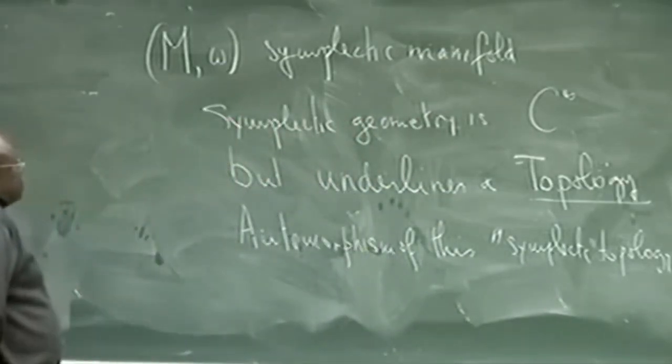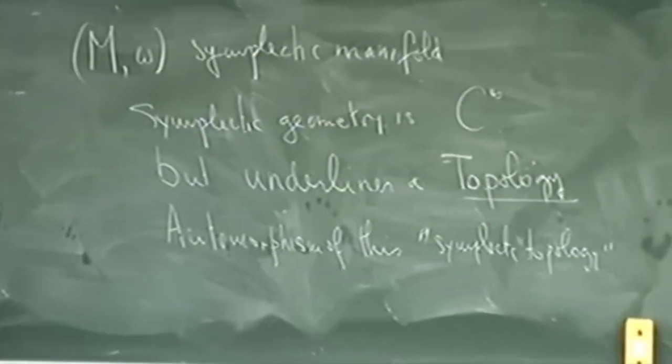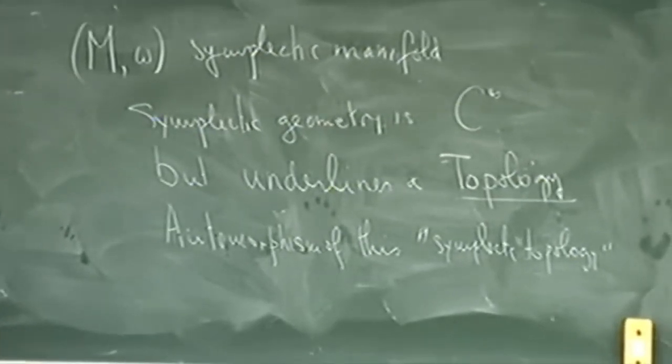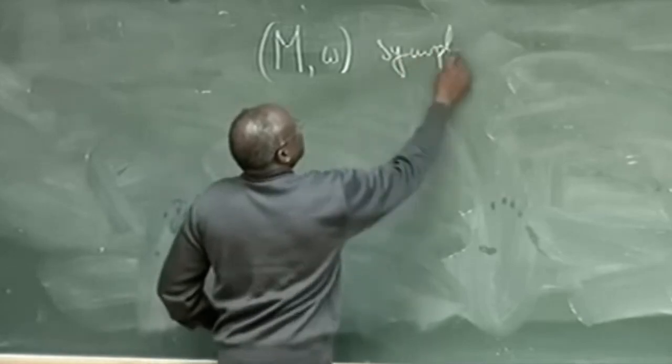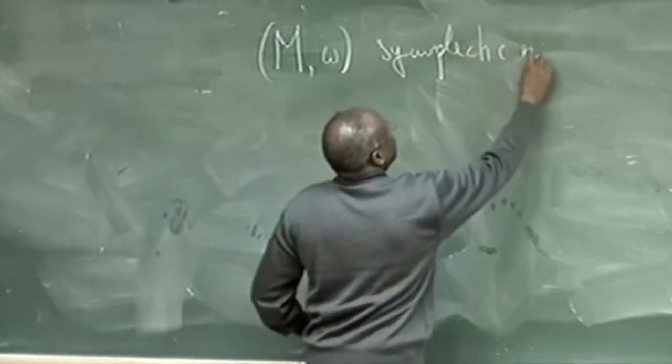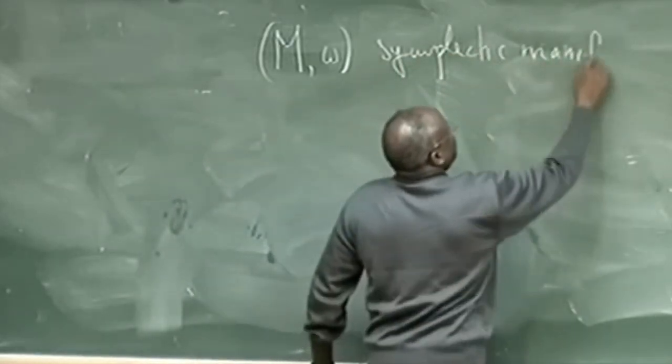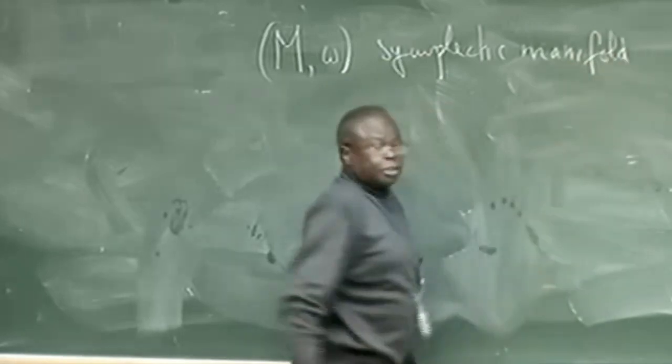One of his most notable contributions is his work on the group of Hamiltonian diffeomorphisms of a compact, connected, symplectic manifold. He proved that this group is simple, which means it does not admit any non-trivial homomorphisms to the natural line.